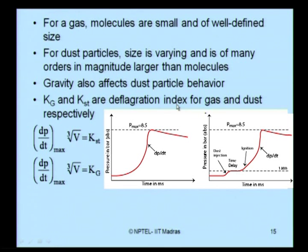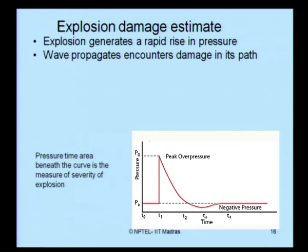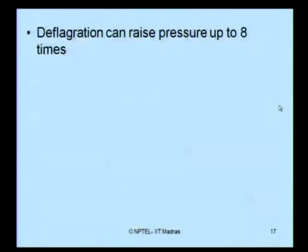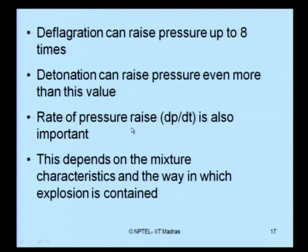Looking at explosion damage estimates, the explosion causes a rapid pressure rise, the wave propagates and encounters damage in its path, followed by a negative pressure phase. The area under this curve gives the measure of severity. Deflagration can raise pressure up to 8 times its value, whereas detonation can raise pressure even more. The rate of pressure rise dp/dt is important to estimate damage caused by dust or gas. The pressure rise depends on the mixture characteristics and the way the explosion is contained.